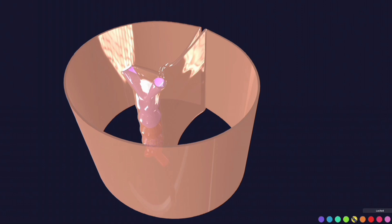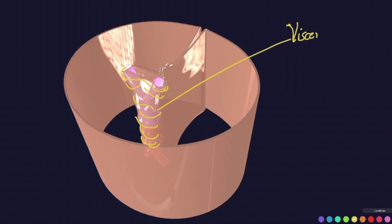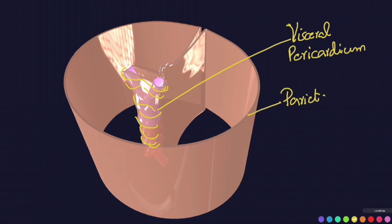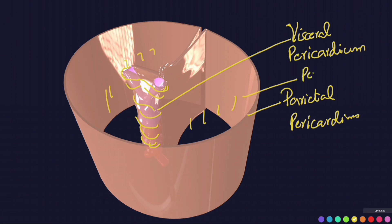At this stage, the intraembryonic splanchnopleuric mesoderm wrapping around the heart tube or primitive heart can — for the sake of concept — be called the visceral pericardium or visceral layer of pericardium. The somatopleuric intraembryonic mesoderm forms the parietal pericardium, and the cavity in between them is called the pericardial cavity.